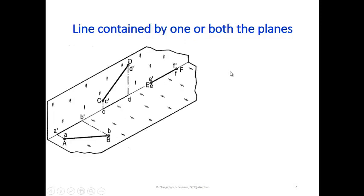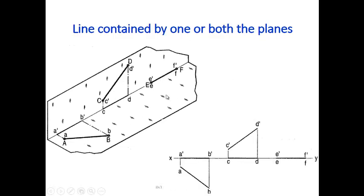Line contained by one or both planes means lying on the horizontal or vertical plane. The true length is drawn on the horizontal plane, and separately the true length is drawn on the vertical plane. This case shows the true length contained by both the horizontal plane and vertical plane.